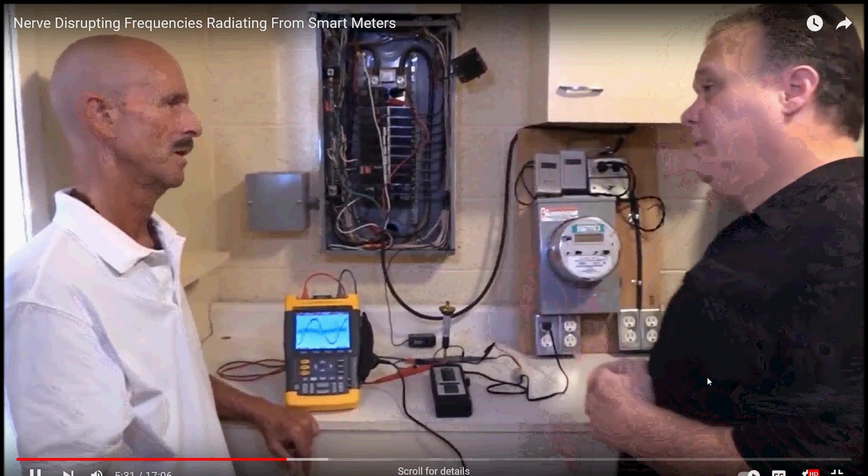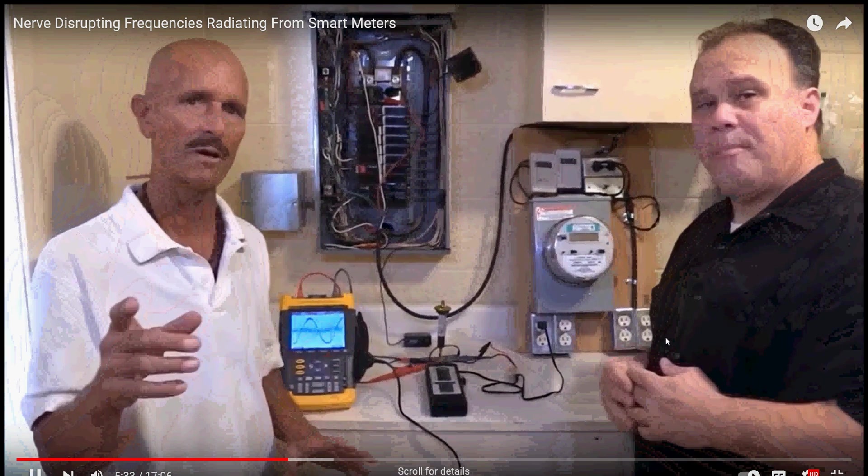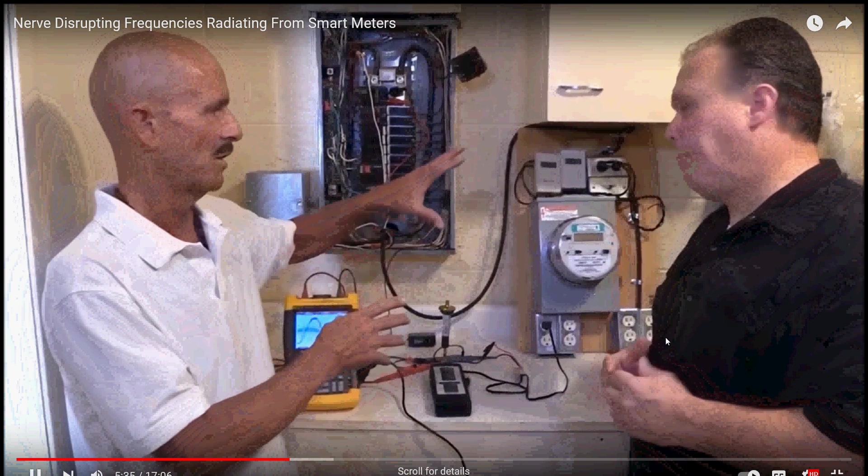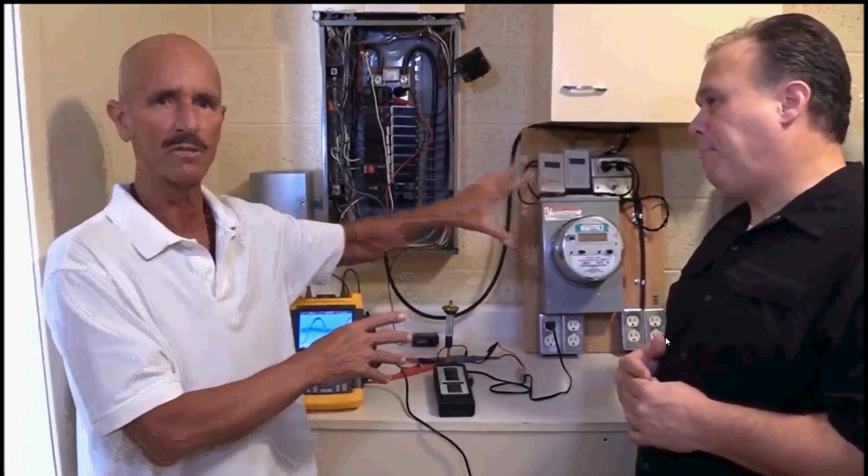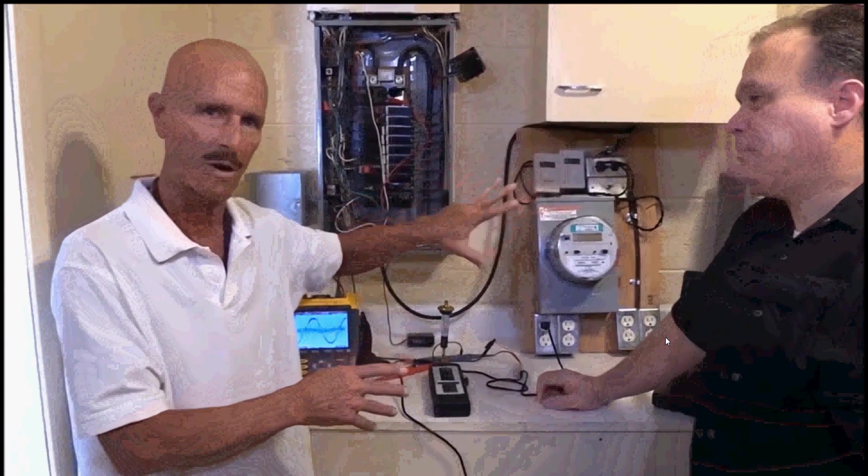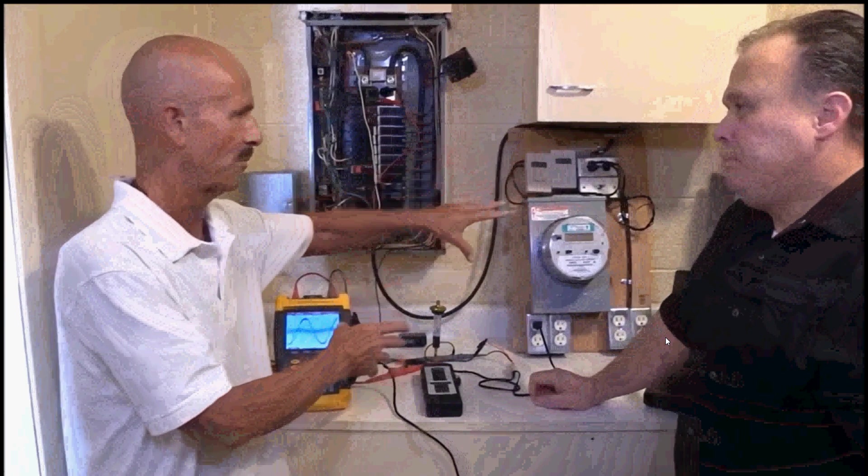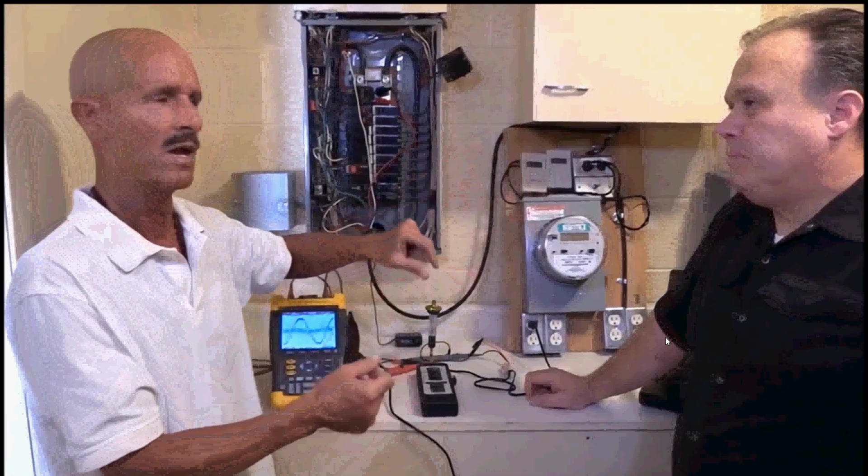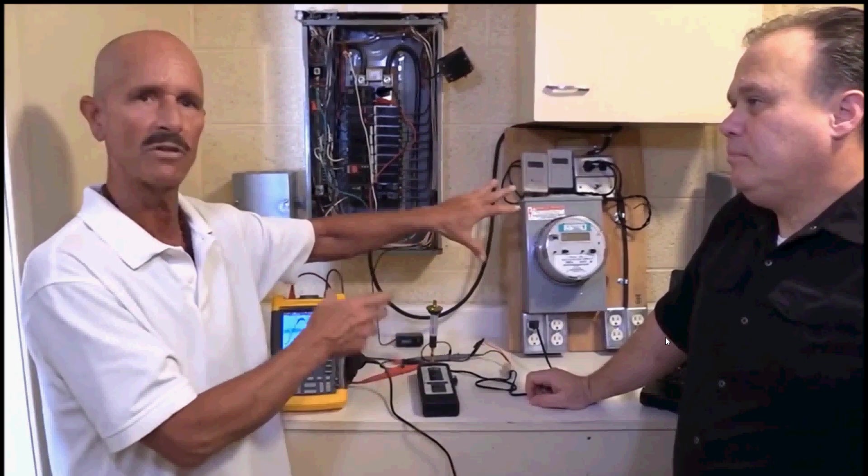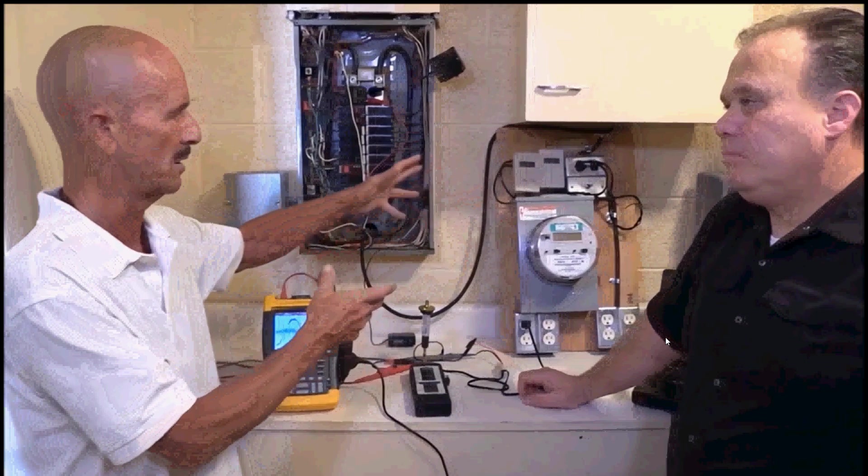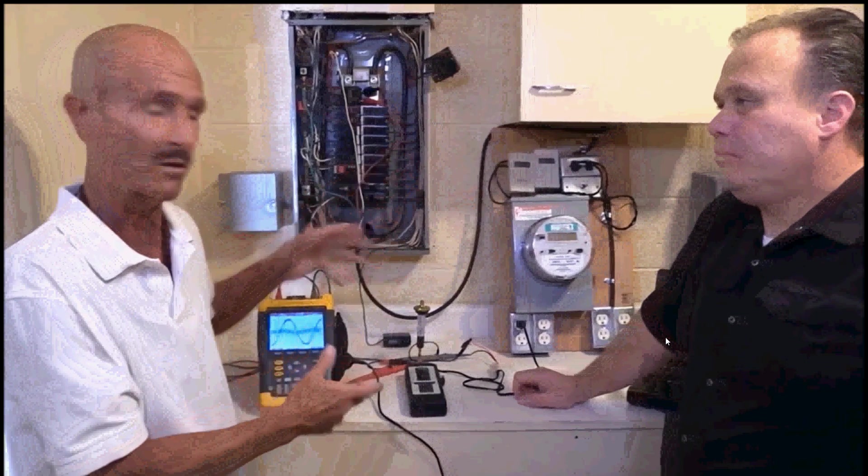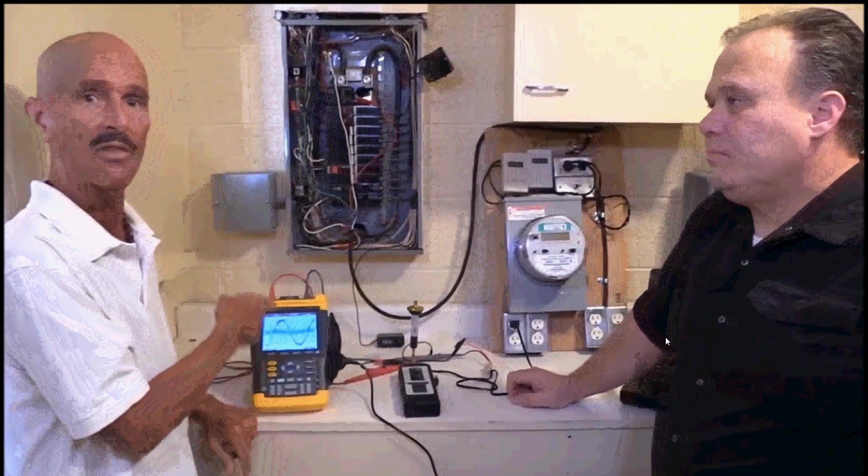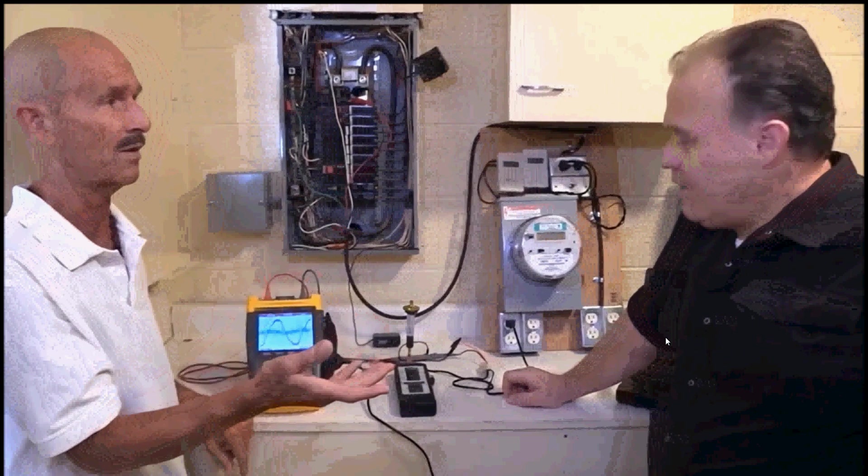So what we're seeing here folks is not just the microwave transmissions that go through the air from the smart meter, but they also, because this is at the entrance of the electricity to your house, the transmission, the frequencies of the transmissions get sent along the wiring as well. And that's what we're seeing here on this fluke oscilloscope. Is that right? That's correct.